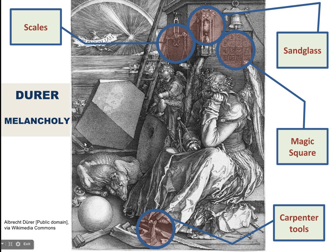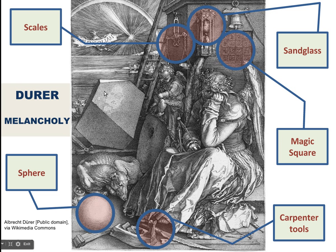On top of this, we have the Carpenter Tools. In this case, they stand for human hands-on activity. They are related to the compass and the two big pieces of stone that have been carved out by means of these tools, and they represent an intellectual activity of human beings. Finally, we have this sphere, which is always a symbol of perfection — the perfection that this winged goddess cannot reach. That's why she is completely bewildered by this situation.